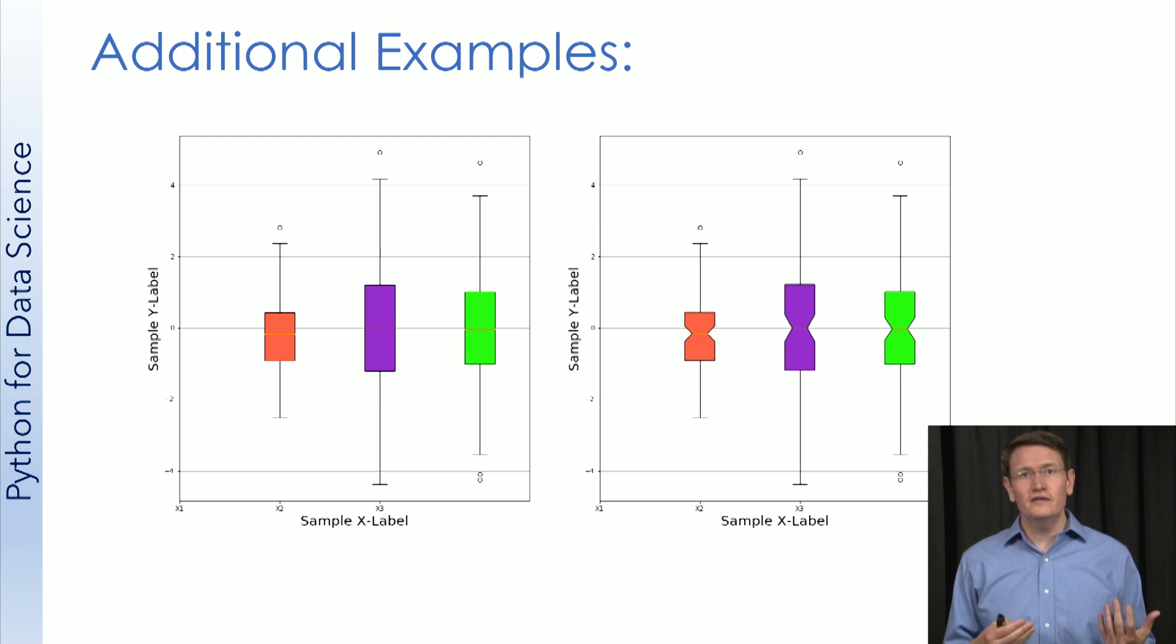Box plots tell you the median, values within the interquartile range, and elements above the third quartile and below the first, as well as the maximum minimum values. That's a lot of useful information all in one figure.